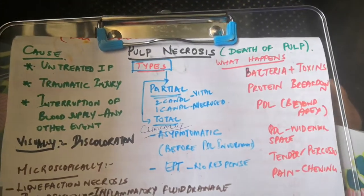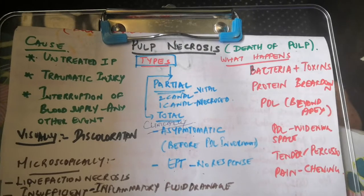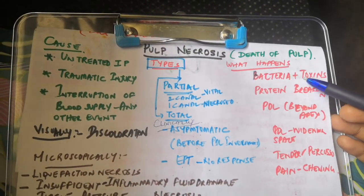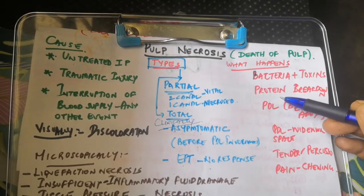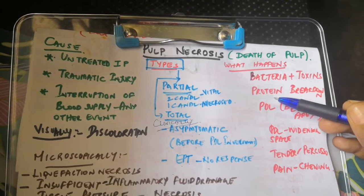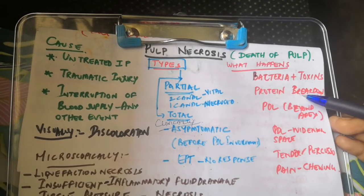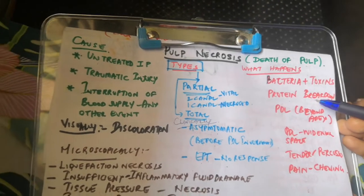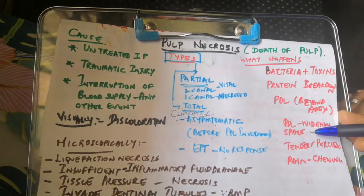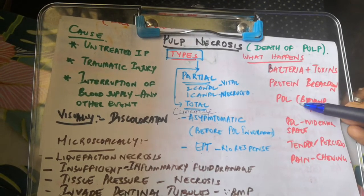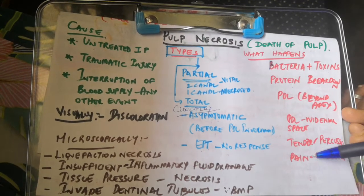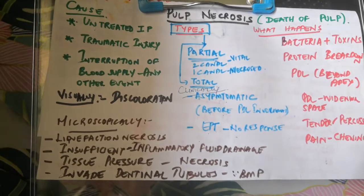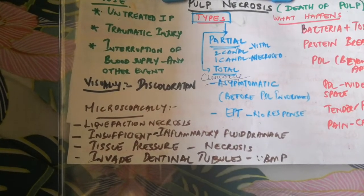What is actually happening is that bacteria and their toxins in the pulp chamber cause protein degradation — the breakdown of proteins in the tissue. If this process extends beyond the PDL, it results in widening of the periodontal space, tenderness on percussion, and pain on chewing as consequences.